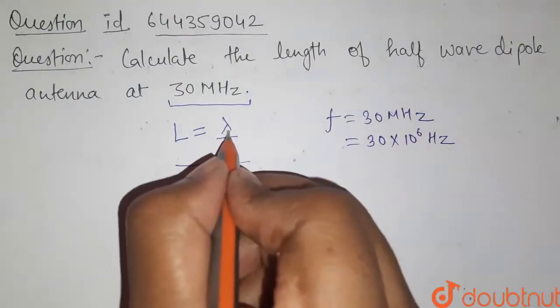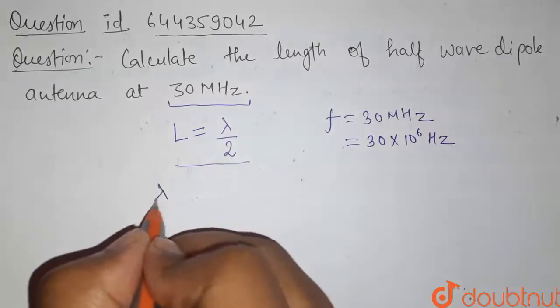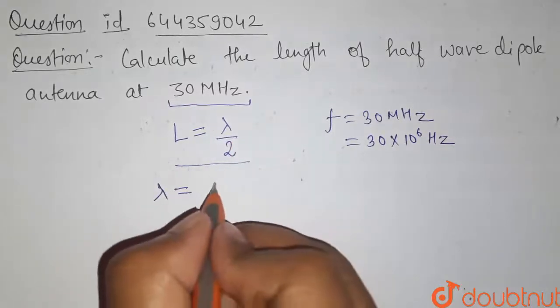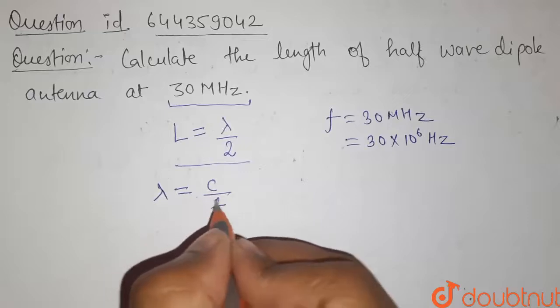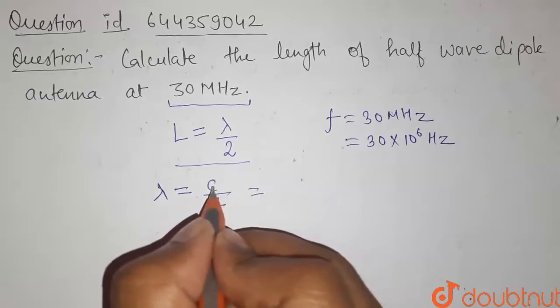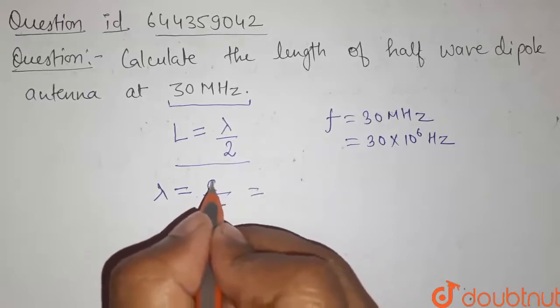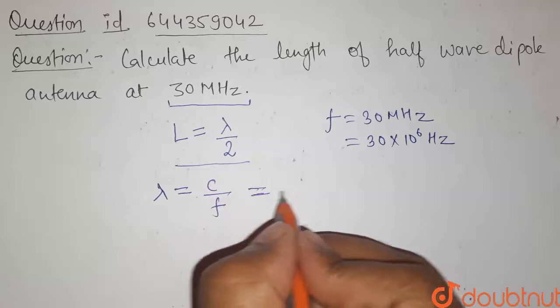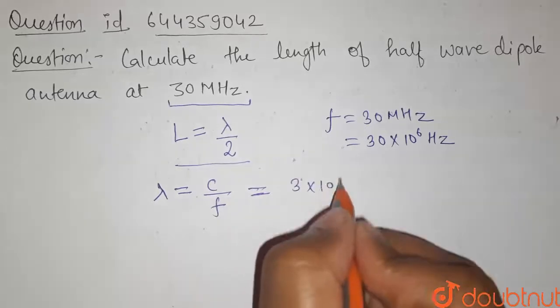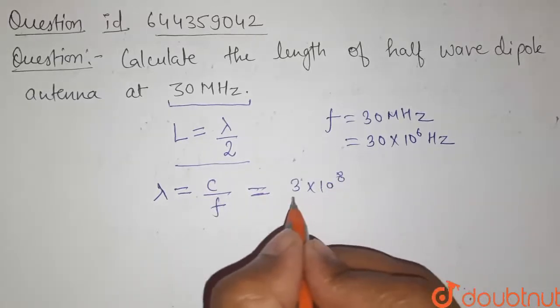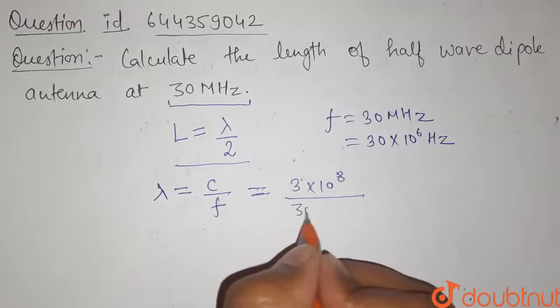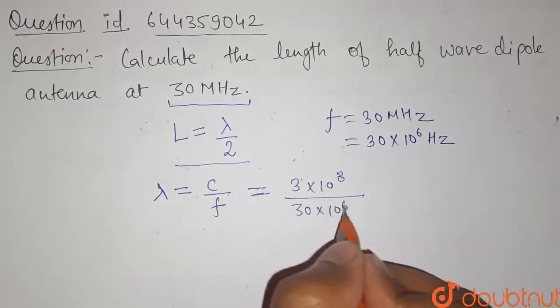For length, we have to find the wavelength. We'll use the relation lambda equals C upon F, where C is the speed of light. So lambda equals 3 times 10 to the power 8 meters per second divided by frequency, which is 30 times 10 to the power 6 hertz.